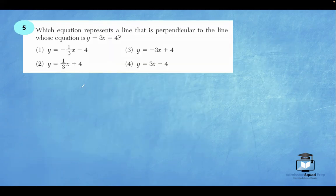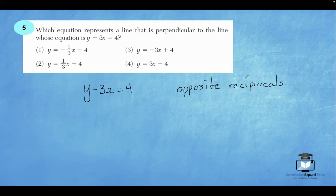Let's continue. Number 5. Which equation represents a line that is perpendicular to the line whose equation is y minus 3x equals 4? Recall that the slope of perpendicular lines are opposite reciprocals. What that means is if one slope is positive, the other one's going to be negative. And if one slope is one third, the other slope will be 3 over 1.